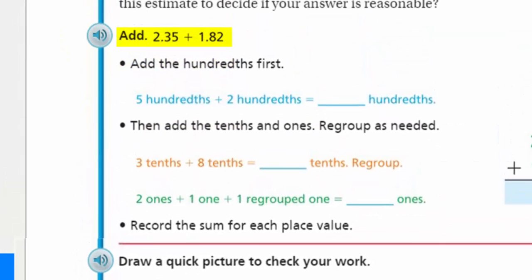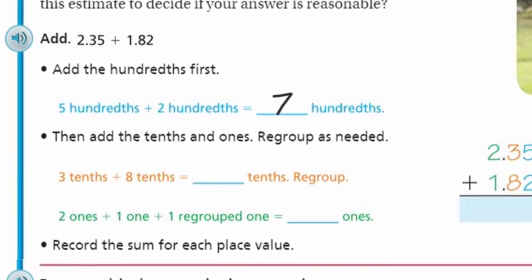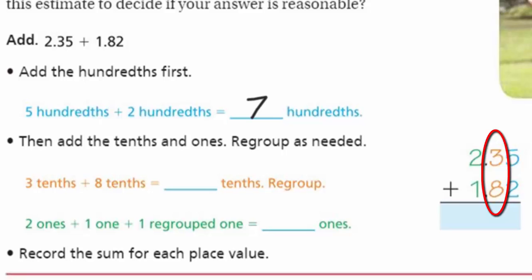Let's look at the next part. It says, Henry estimated that about four centimeters of rain fell in two hours. What is the total amount of rain that fell? How can you use this estimate to decide if your answer is reasonable? So assuming that Henry made a pretty good estimate, let's take a look. Here it says we're going to add 2.35 plus 1.82 because we have a certain amount of rain that fell in one hour, and then so much rain fell in the second hour.